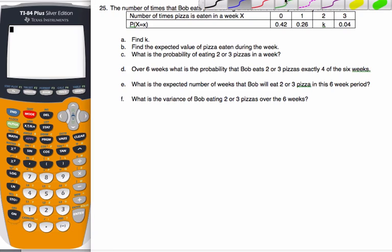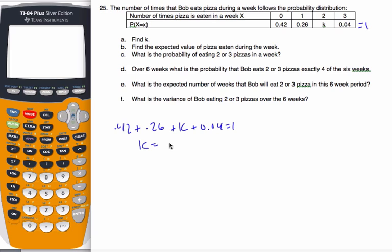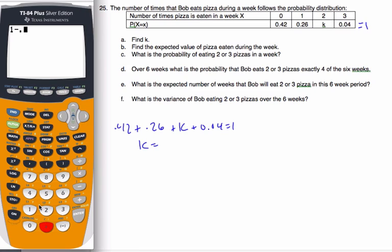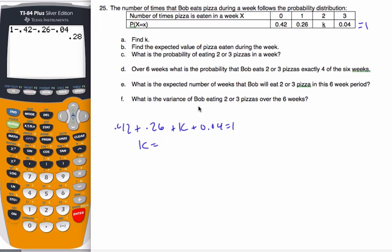If we want to find k, that means all these probabilities have to add up to 1. And so if I just go 0.42 plus 0.26 plus k plus 0.04 equal to 1, and I solve k, I end up with 1 minus 0.42 minus 0.26 minus 0.04, and I get 0.28 is my k value here, 0.28.